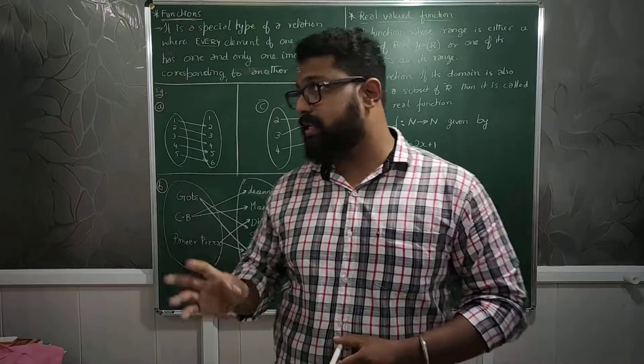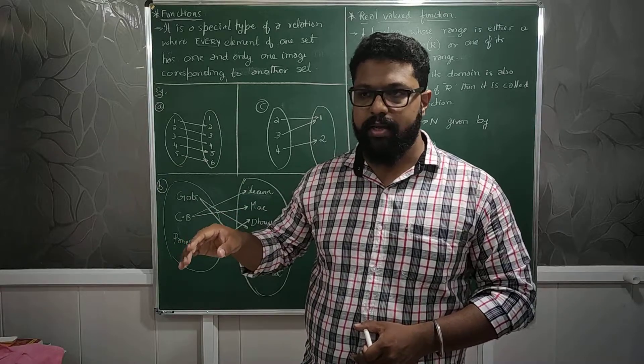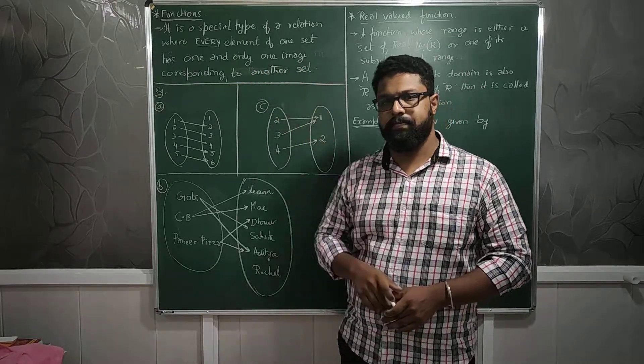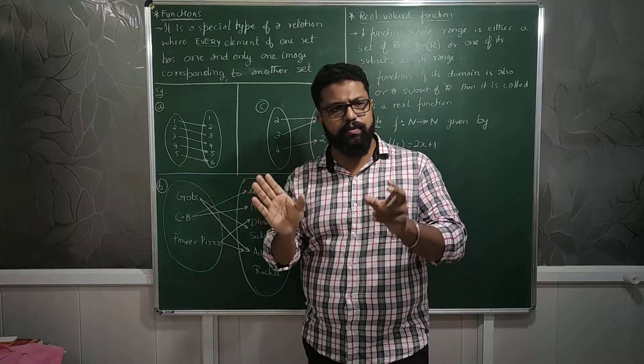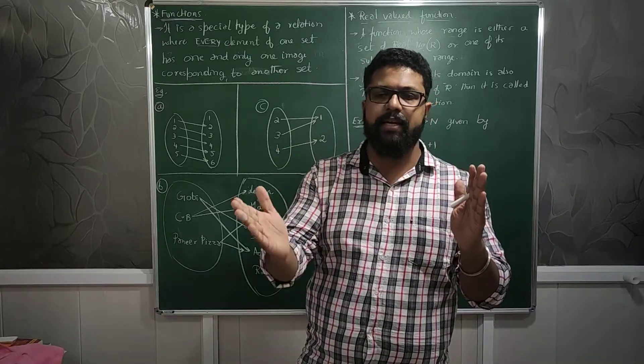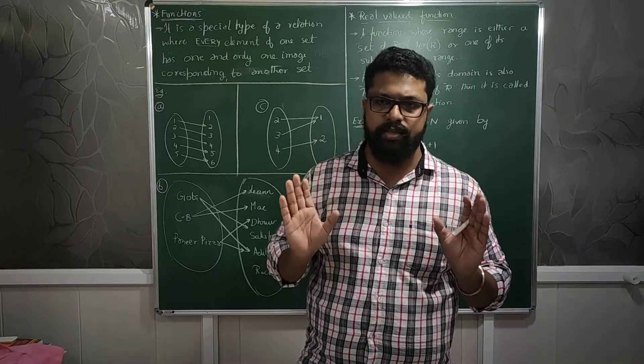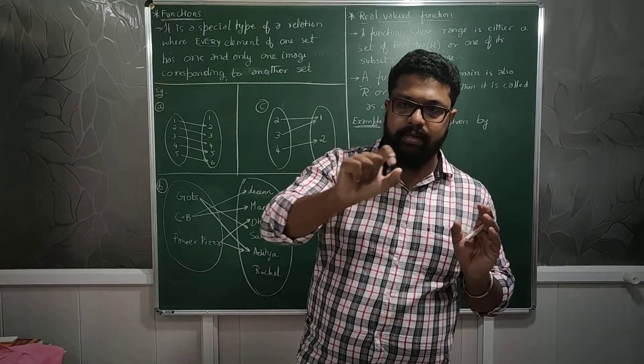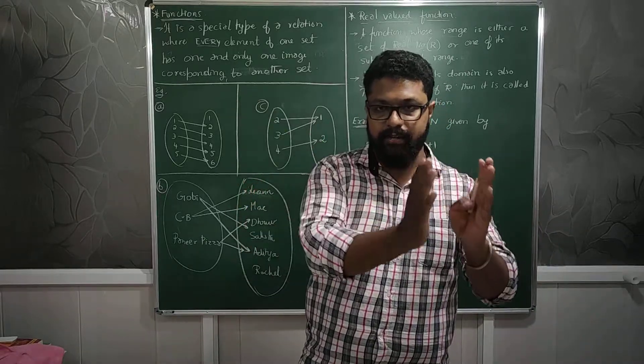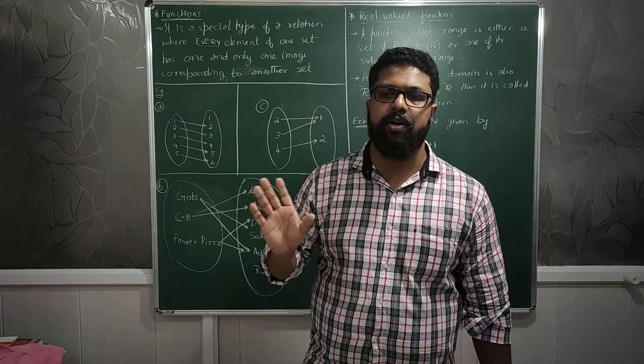Here the definition of function says that it is a special type of relation. A function has to be a relation. It is a relation where every element of one set has one and only one image corresponding to the other set. There are two sets available. Whenever it is a relation, obviously two things are needed. So one thing is related to the other, that is called a relation.